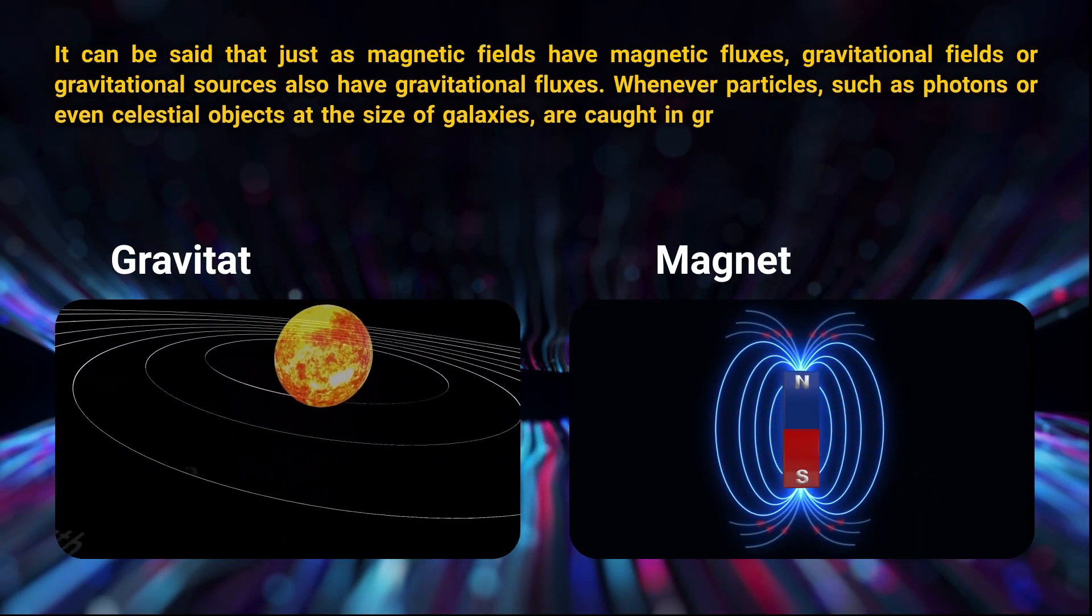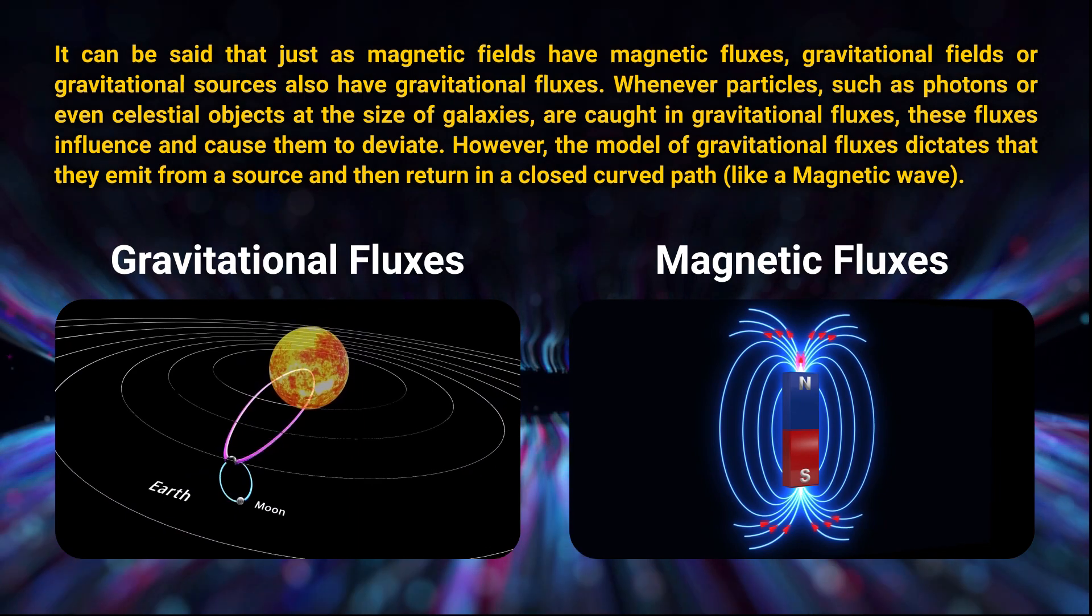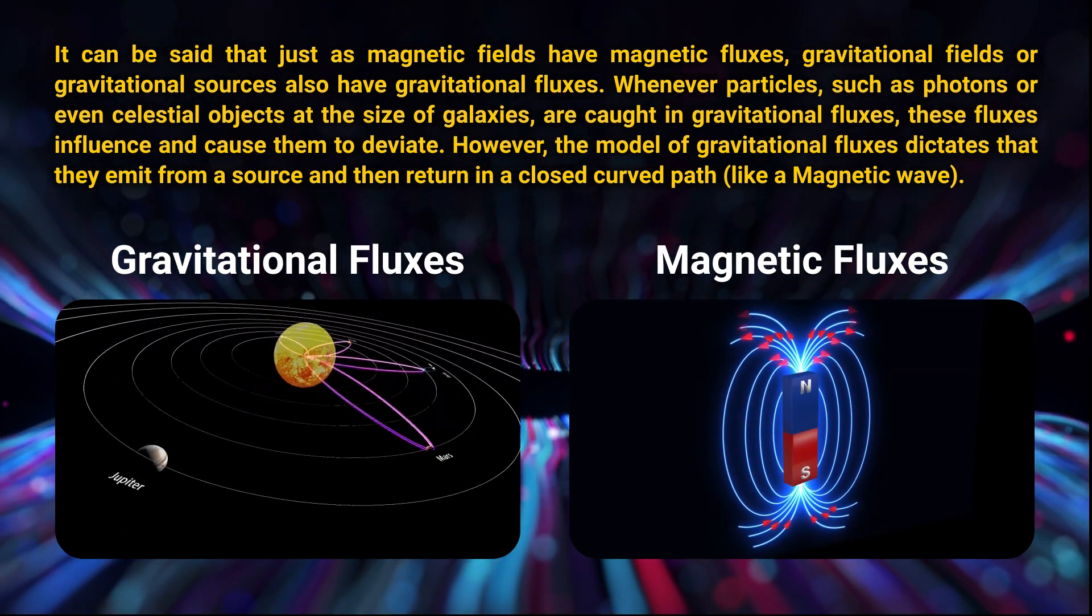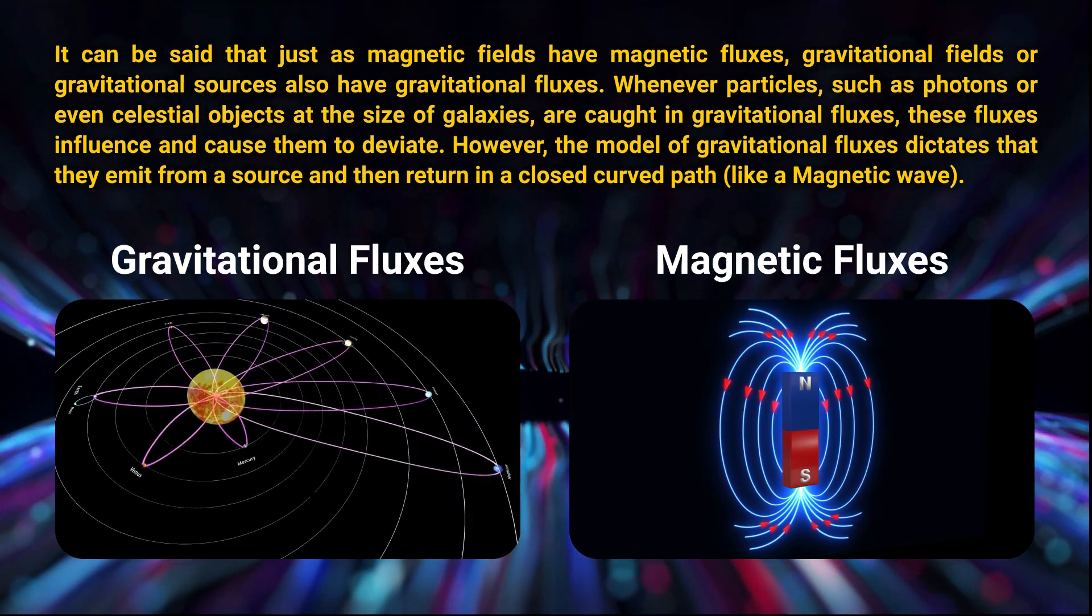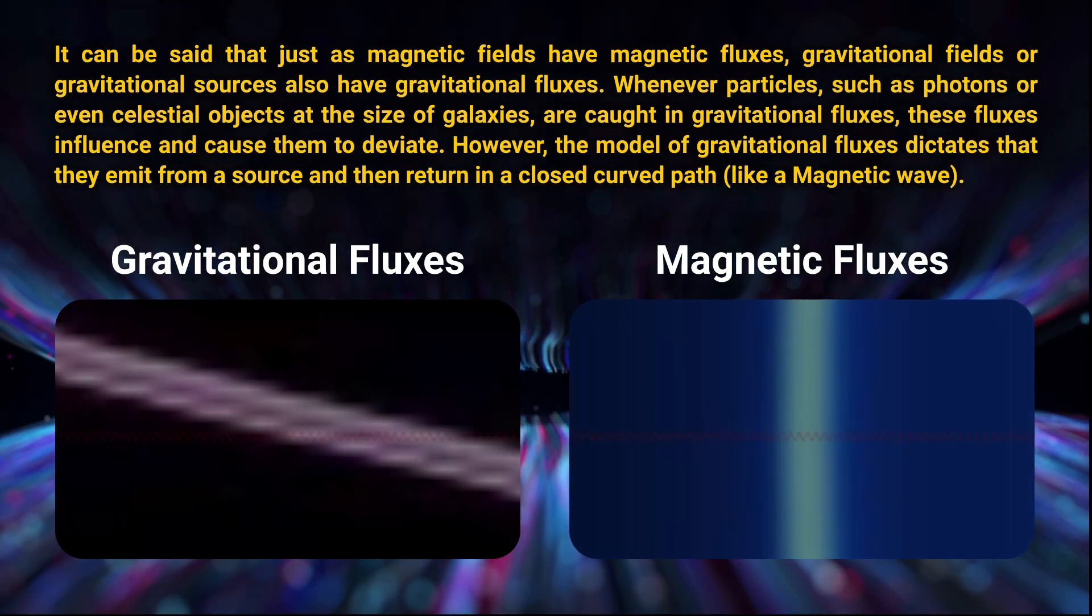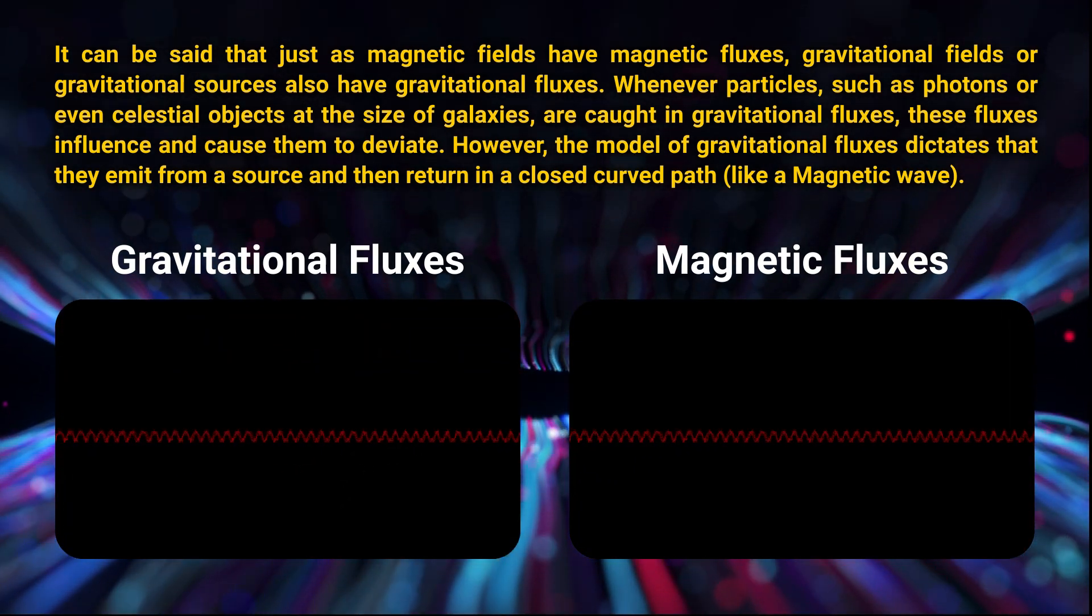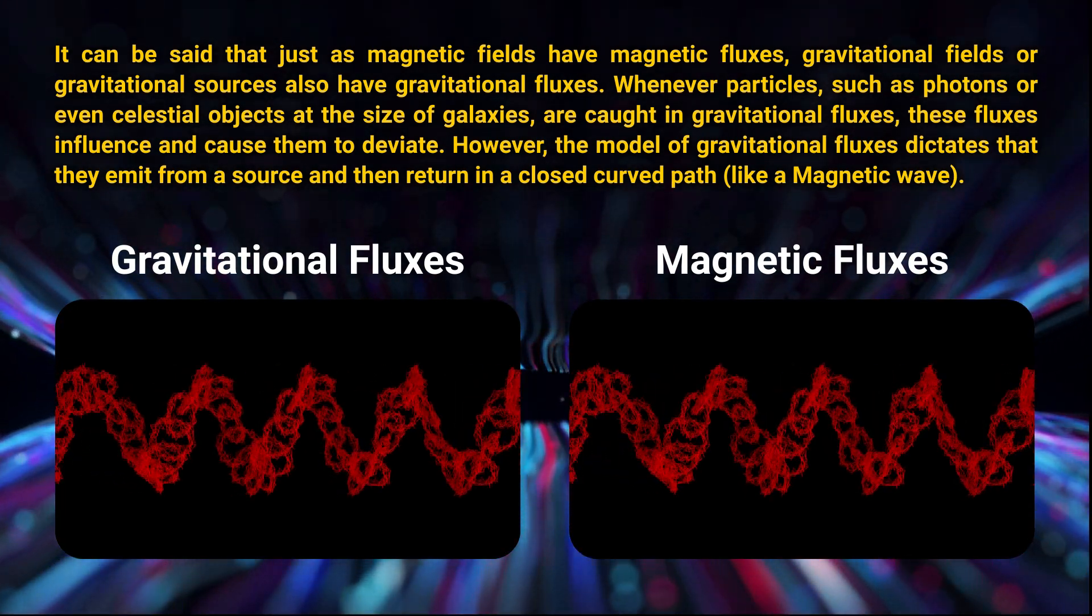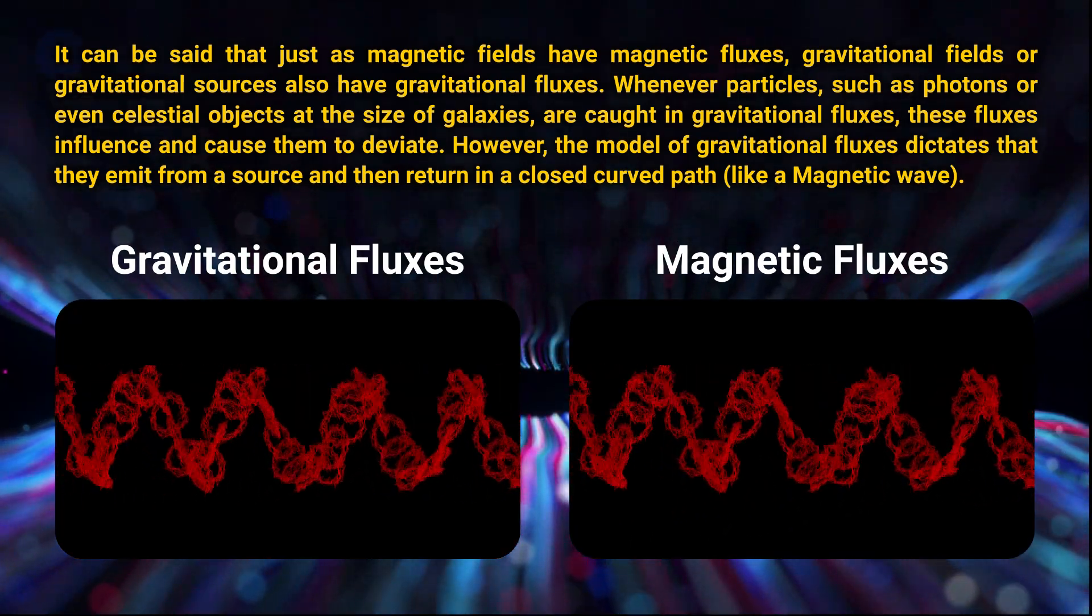It can be said that, just as magnetic fields have magnetic fluxes, gravitational fields or gravitational sources also have gravitational fluxes. Whenever particles such as photons or even celestial objects at the size of galaxies are caught in gravitational fluxes, these fluxes influence and cause them to deviate. However, the model of gravitational fluxes dictates that they emit from a source and then return in a closed-curved path, like a magnetic wave.